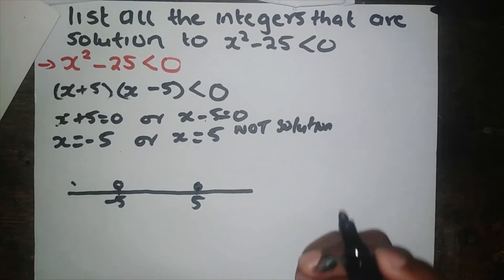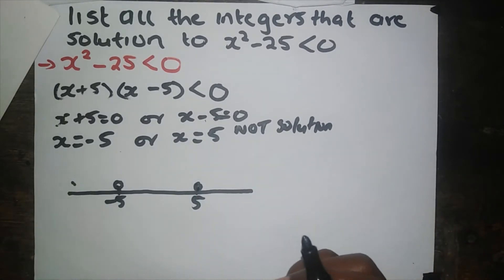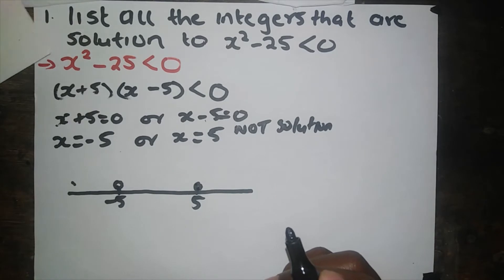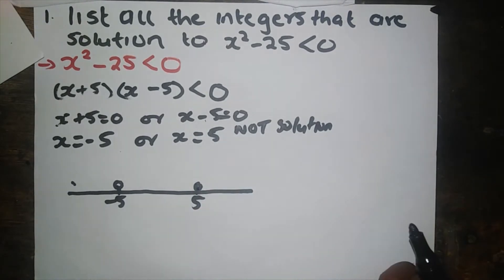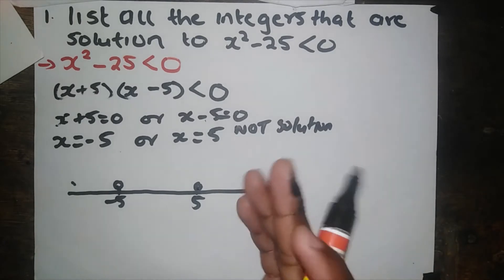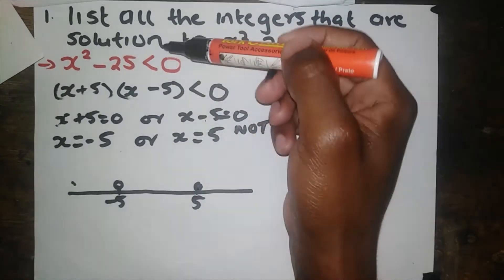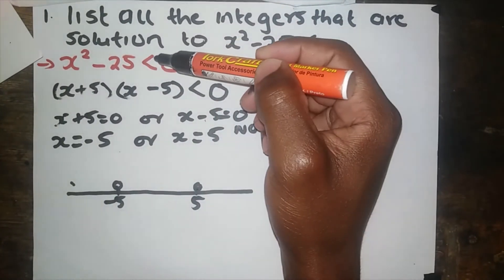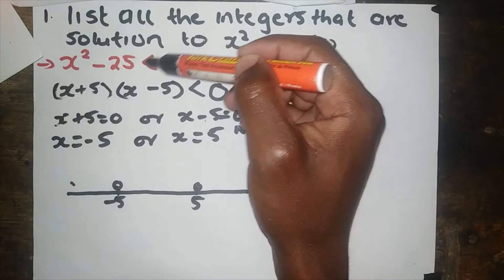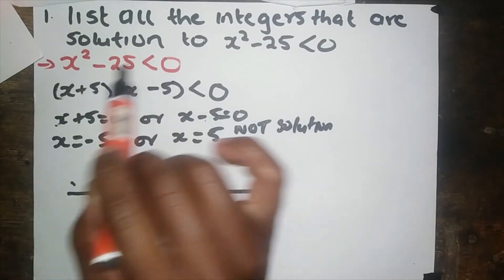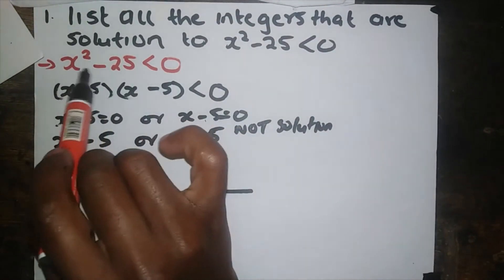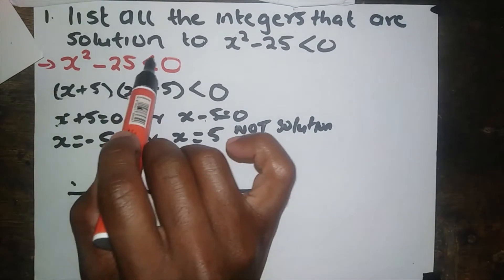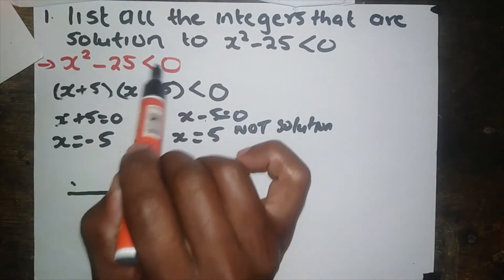What we need to understand here is that this inequality — x squared minus 25 — is less than zero. Since it is less than zero, we need to find the values that will satisfy this equation. What are the values that are less than zero? Those values must be negative.